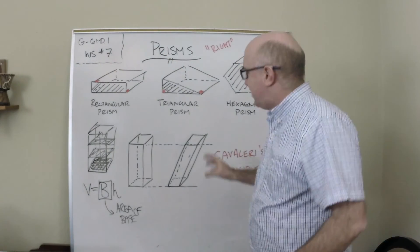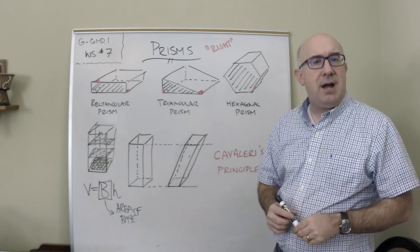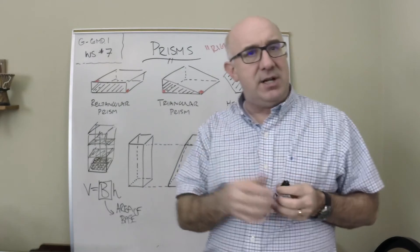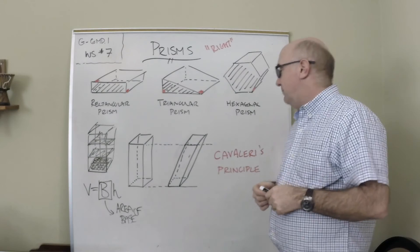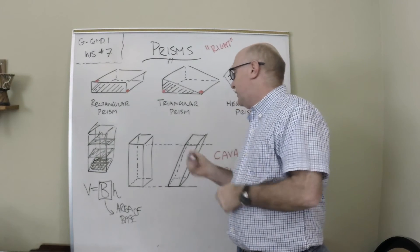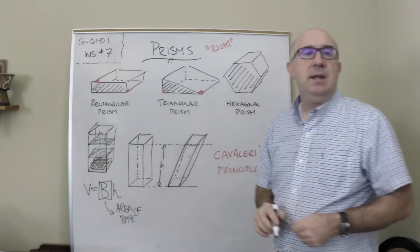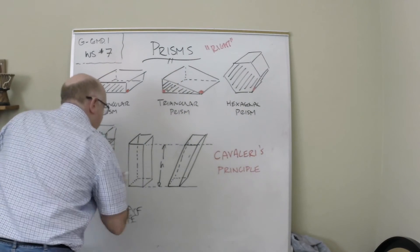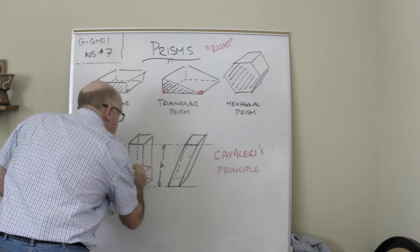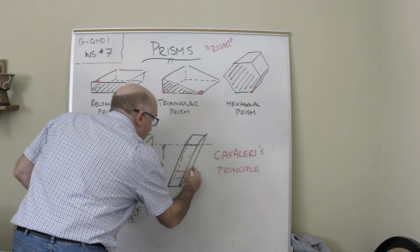Now Cavalieri came along many years ago and he said, 'Let's talk about these two shapes here.' He says, 'I believe they have the same volume.' And here's his conjecture, which is a truth actually. He said if they have the same height—and you can see I've tried to denote the same height here—and then he said if you take a cross-section, and he says that this cross-section here, if that area is equal to this area...